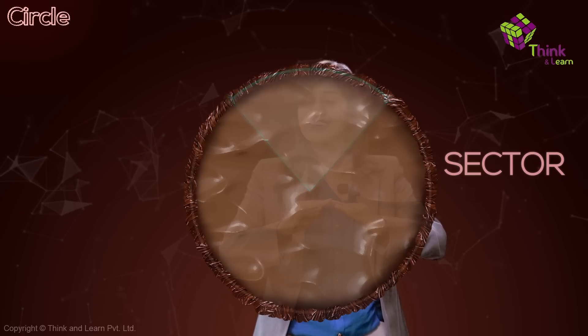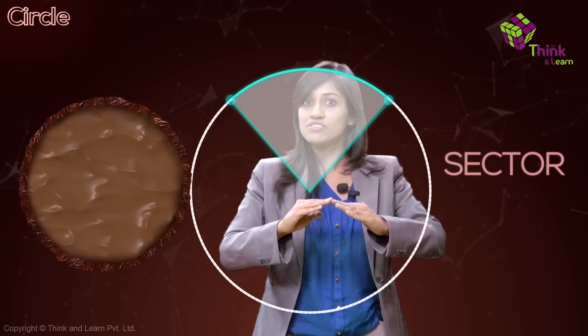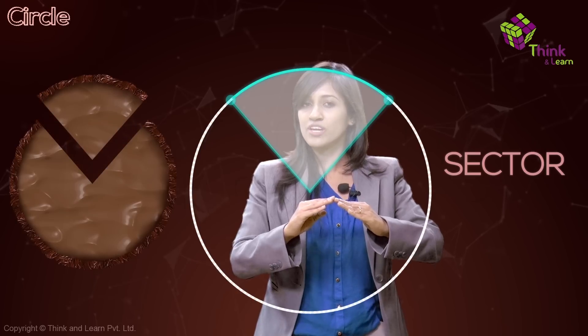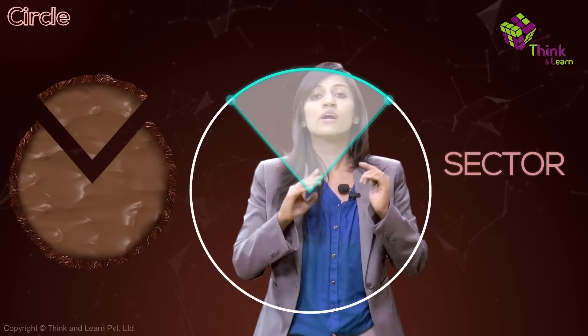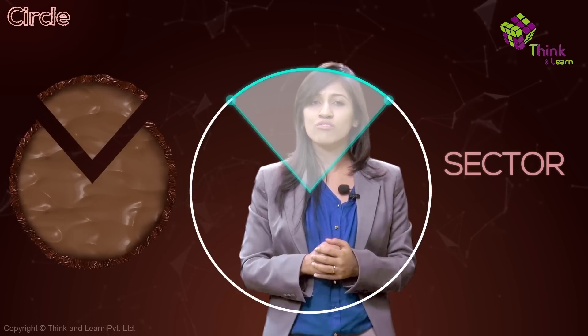Sectors are very important — they help you decide how much of a cake you need to give your neighbor! And pizzas and cakes will keep following us through all our chapters on circles. Now, back to my circle: if I have a chord and shade the region on one side of it, I get a segment.